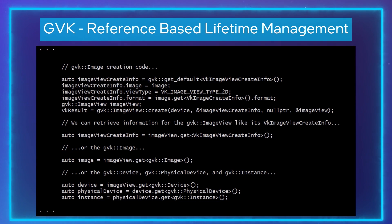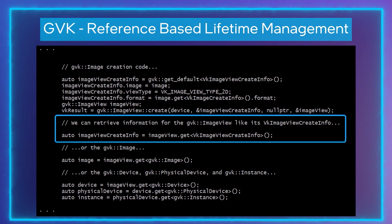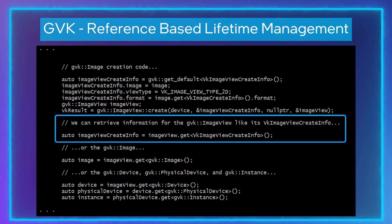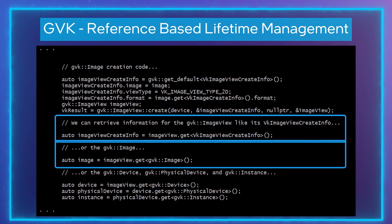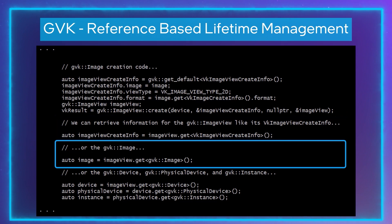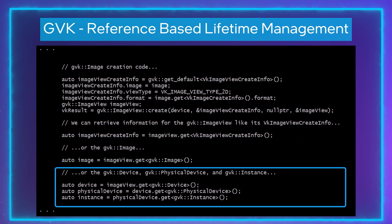Once we have a valid GVK handle to an object, we can retrieve its CreateInfo, we can retrieve other objects that it references, and we can retrieve its parent. Note here that we are getting the VKImageViewCreateInfo from the ImageView. We can also retrieve a reference to the image, the device, the physical device, and the instance.